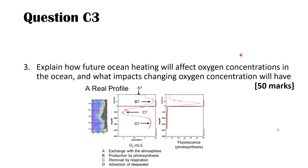This slide from the lectures shows an oxygen concentration profile with lots of variation, indicating processes causing that variation. One process is exchange with the atmosphere — essentially the solubility of oxygen in water. You could note that solubility is temperature dependent, explaining how ocean heating affects that process. But other processes also affect oxygen concentration — photosynthesis is one, and at higher temperatures you might have higher rates of photosynthesis but also higher rates of respiration.